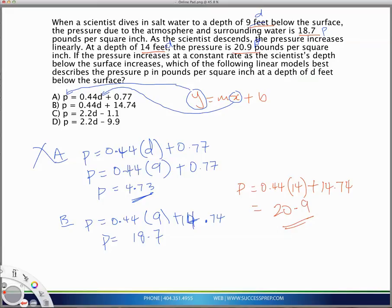So, when I plug in 9, I should get 18.7. When I plug in 14, I should get 20.9 from the equation. And b is the one that does that, because it works for both the, when I plug in 9, I get 18.7. When I plug in 14, I get 20.9. And that's pretty much the answer to this question.